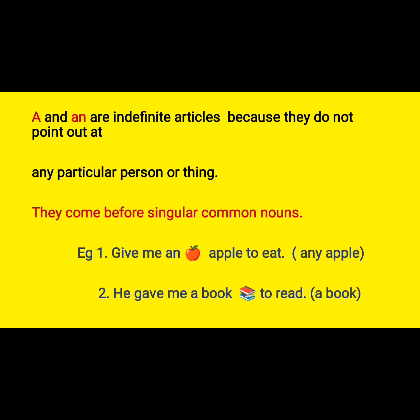A and an are indefinite articles because they do not point out at any particular person or thing. They are used with singular common nouns. For example: give me an apple — I'm talking about any apple. Give me a book to read — any book maybe. I'm not mentioning a particular book, but any book will do. So an indefinite article is used when you're not mentioning something in particular.